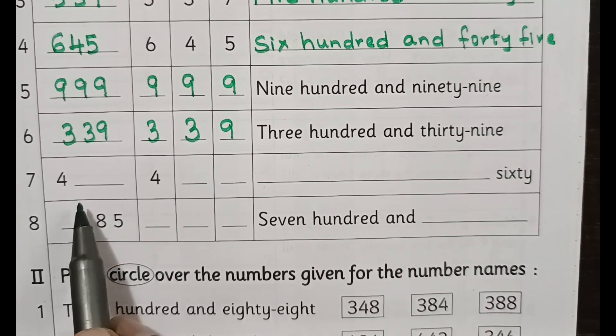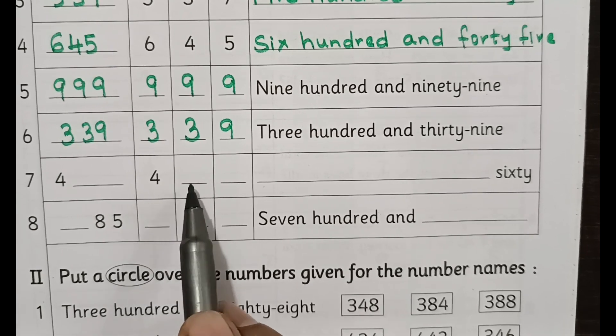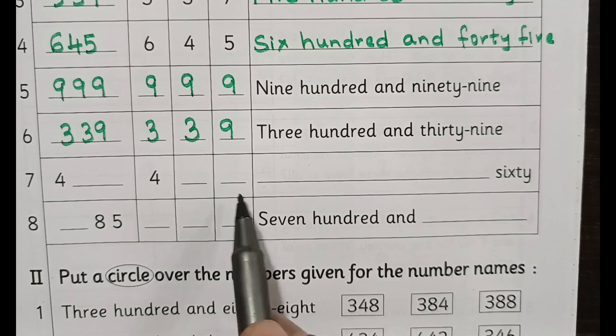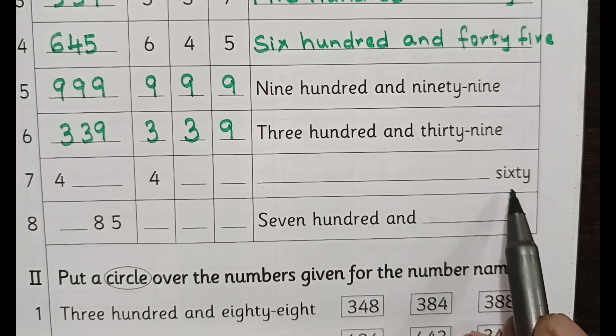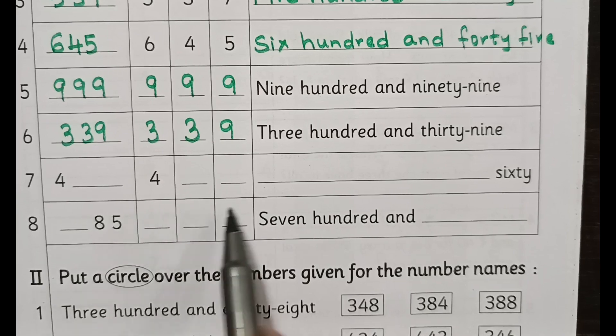Four hundreds, tens, units. And here written 60, so we have to understand this number is four hundred and sixty. This is the order, right. Four hundred and sixty.